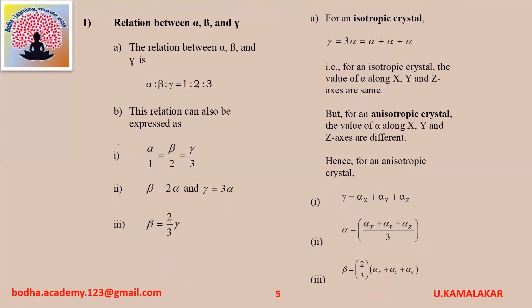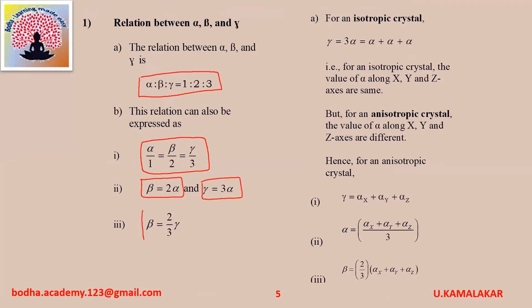The relation between alpha, beta, and gamma is given as alpha : beta : gamma equals 1 : 2 : 3. This can also be expressed as alpha/1 equals beta/2 equals gamma/3, or beta equals 2 alpha and gamma equals 3 alpha. Also, beta equals (2/3) gamma.